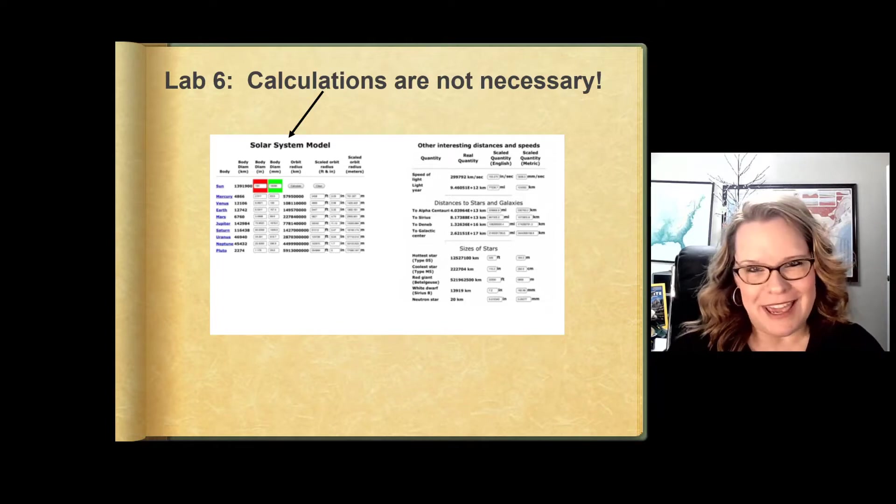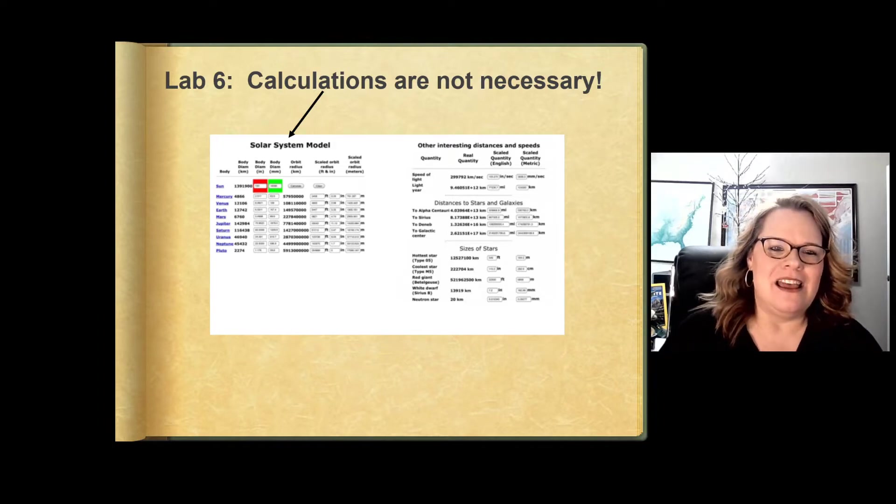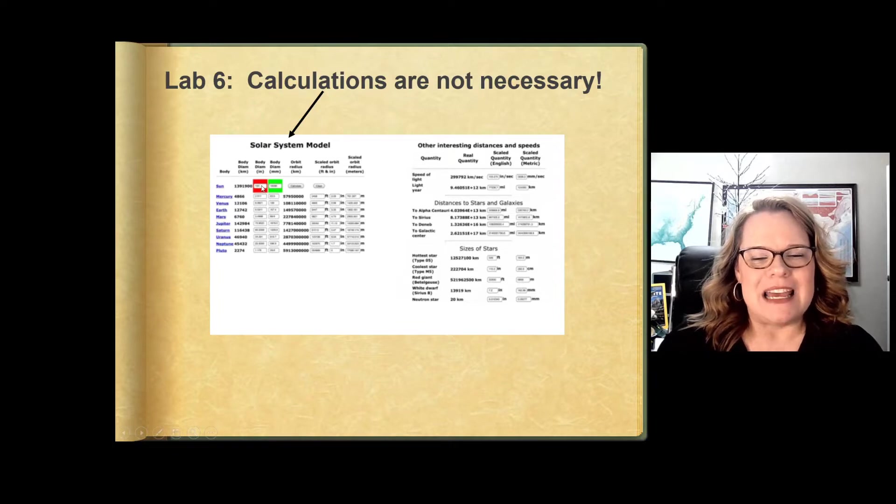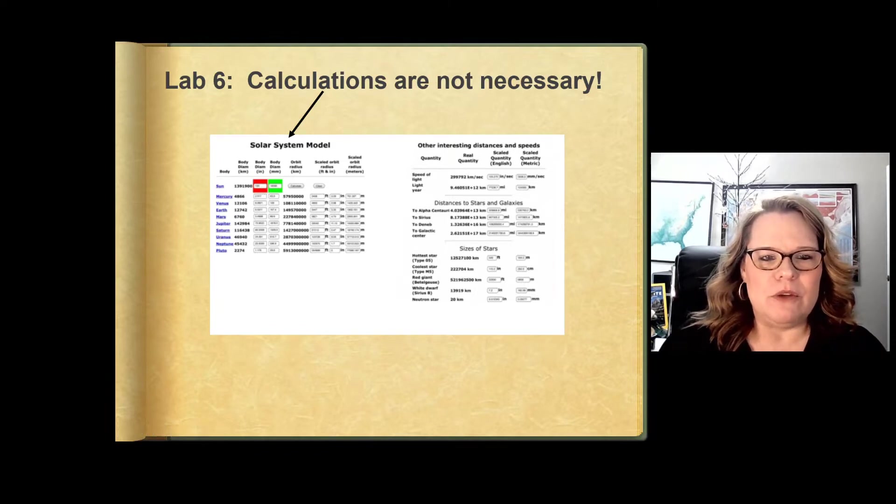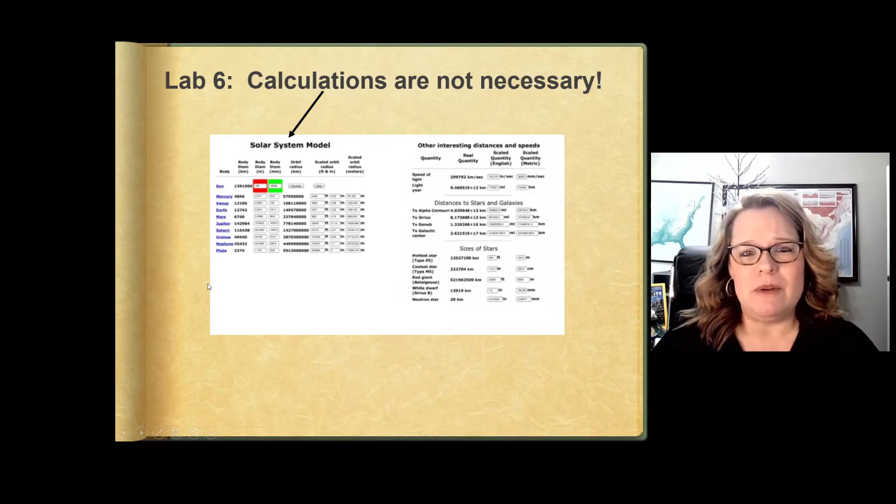That is certainly not the case for this lab. In fact, it is as easy as this. When you click on the link in the web page that I provided in the lab folder, you enter in a size for your sun, just put in a random number. It's going to populate when you hit return everything from Mercury down to Pluto automatically.